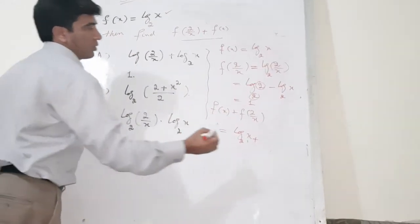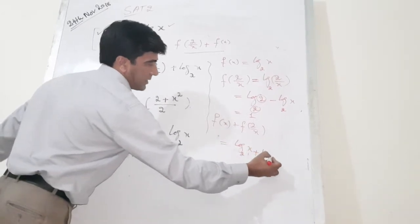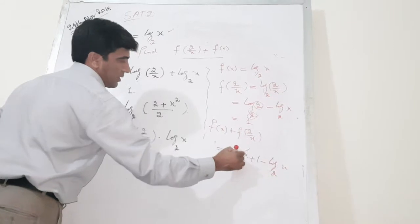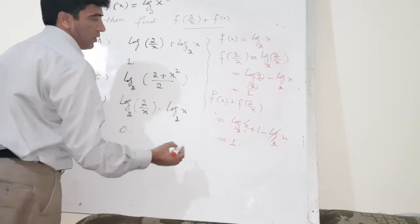actually this is equal to 1 when this base and this number is same, this is equal to 1. So f(2/x) is equal to 1 minus log base 2 of x. So they cancel each other, so 1 is the leftover